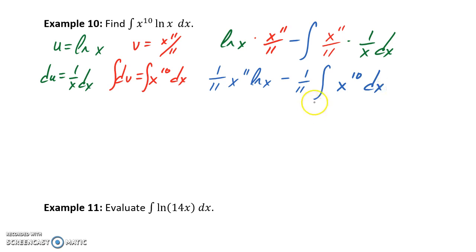So then what we'll do is just focus on this integration piece. The integral of x to the 10th would become x to the 11th over 11 plus some quantity c. So putting all of that back together would give us 1 over 11 x to the 11th times the natural log of x minus 1 over 11 times x to the 11th over 11 will give us x to the 11th over 121 plus c.